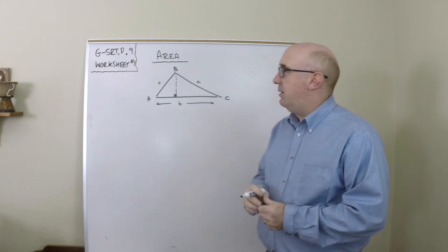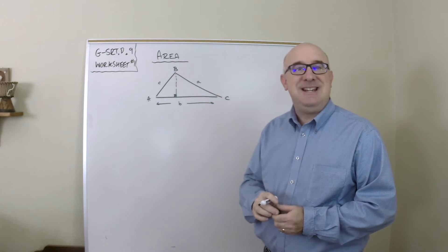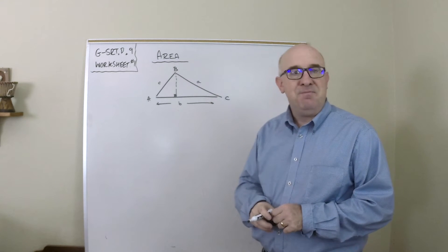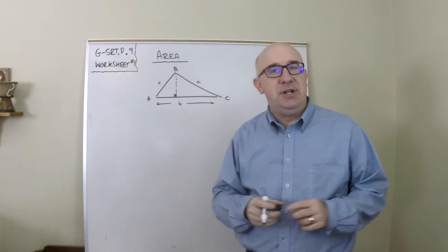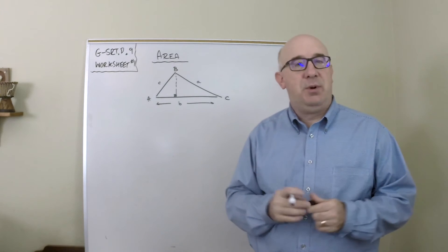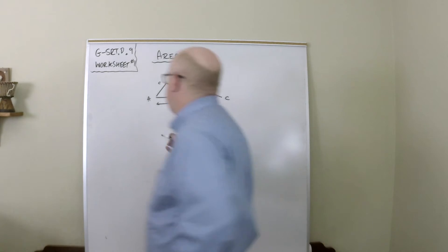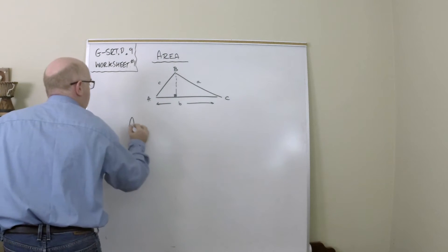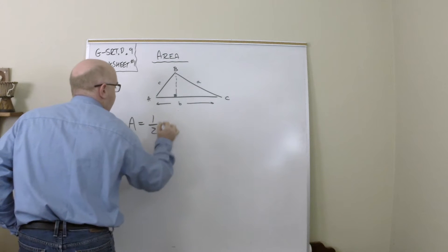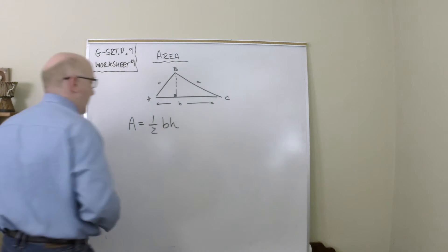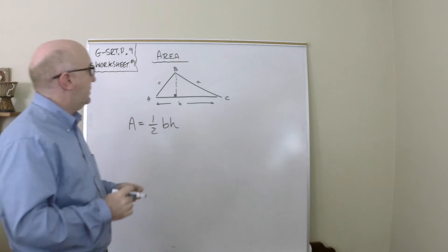All right, we are GSRT D9 worksheet one. This looks at establishing area with the help of some trigonometry. A triangle, as you know, has the formula area equals one-half its base times its height.